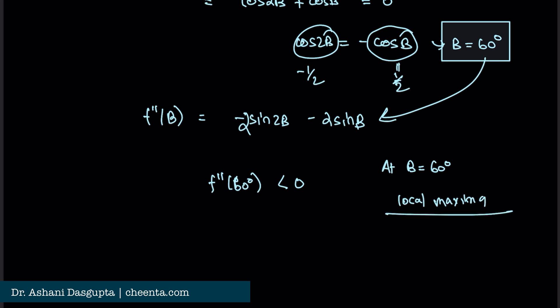If B = 60°, then to maximize the area we need A = C, which means A = C = 60° as well. So triangle ABC is equilateral — the equilateral triangle inscribed in the unit circle has the largest possible area.